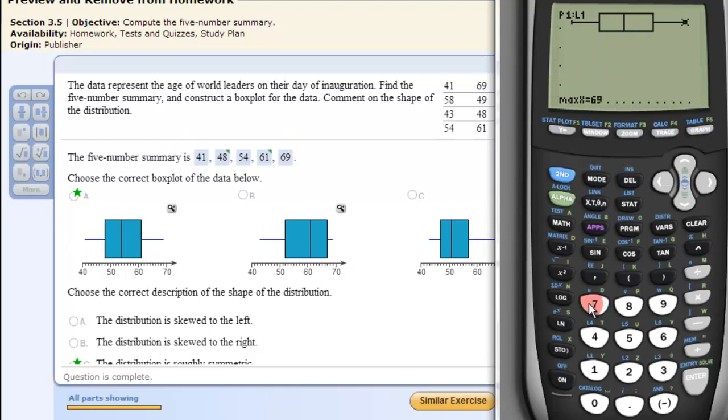And that's how you create a box plot and the five number summary with quartiles on the TI-83-84 calculator.